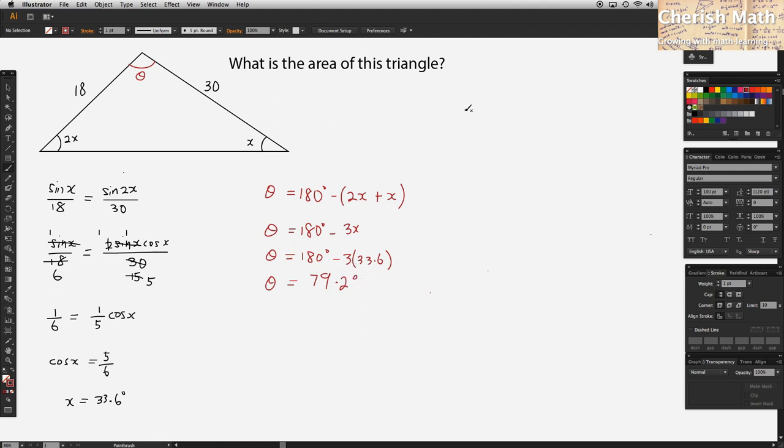The next step, we are going to use this formula to find what is the area of this triangle. Here it goes: 1 half, side A is 18, and side B is 30, sine the theta here is 79.2 degrees.